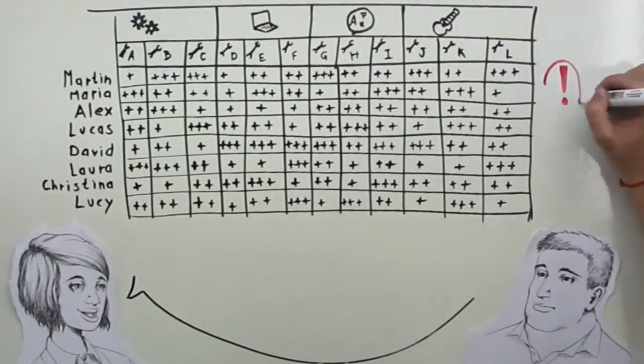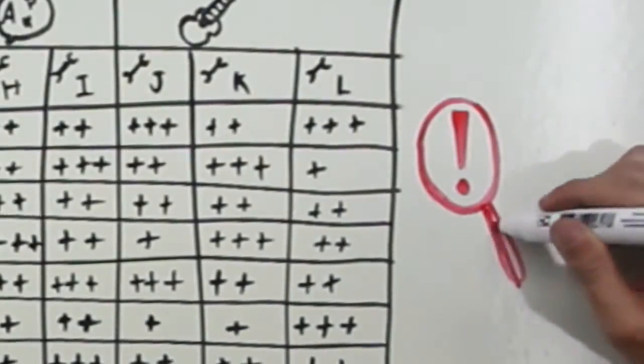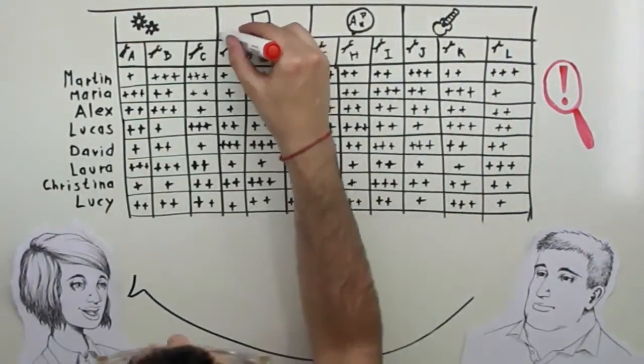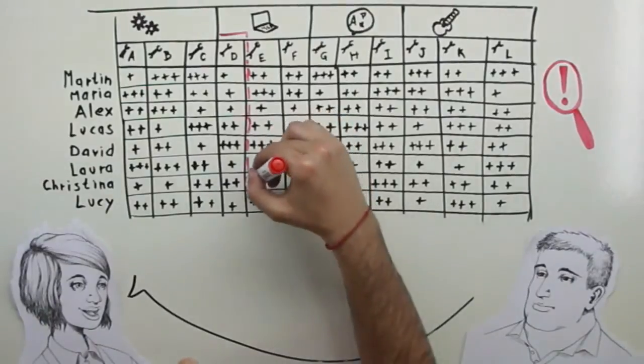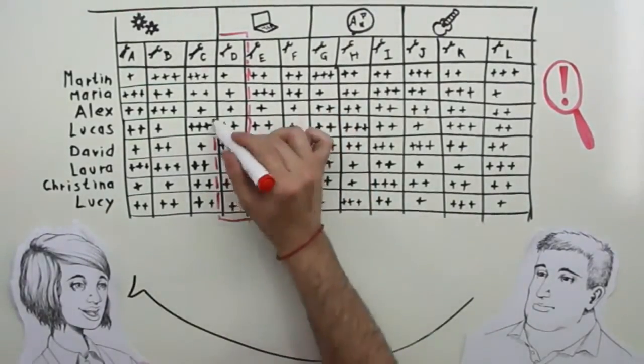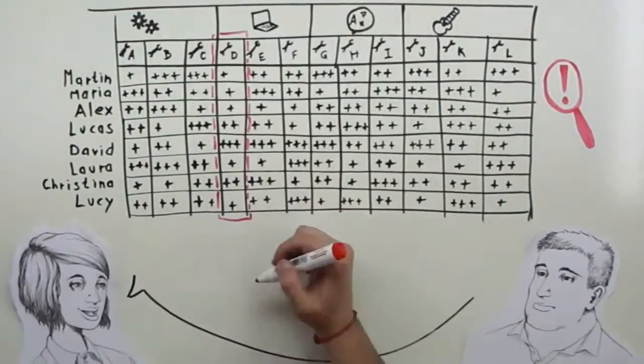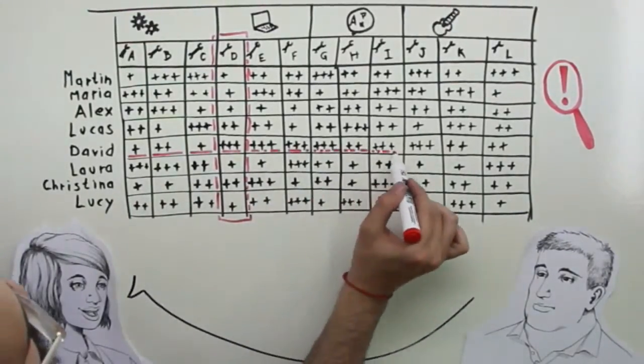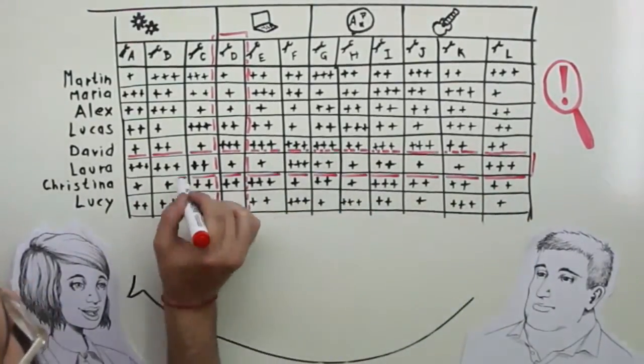Later, you can evaluate the matrix together with the employees and make corrections if needed. Once this step is finished, looking vertically, you will be able to analyze the capacities of all employees to perform a certain task. Looking horizontally, you will have a performance profile of your employees.